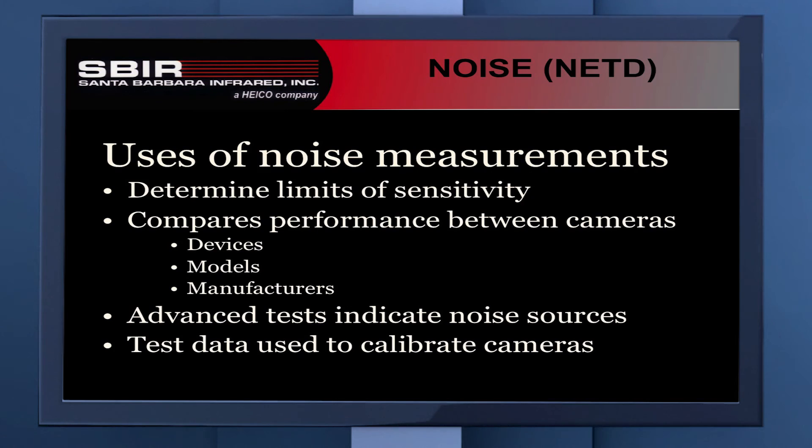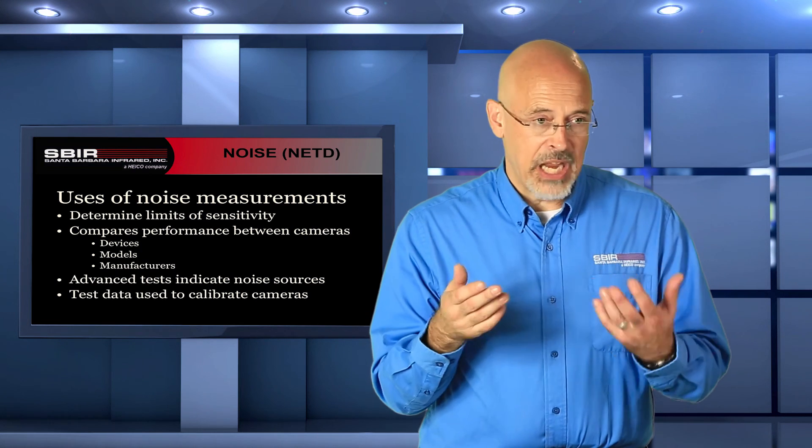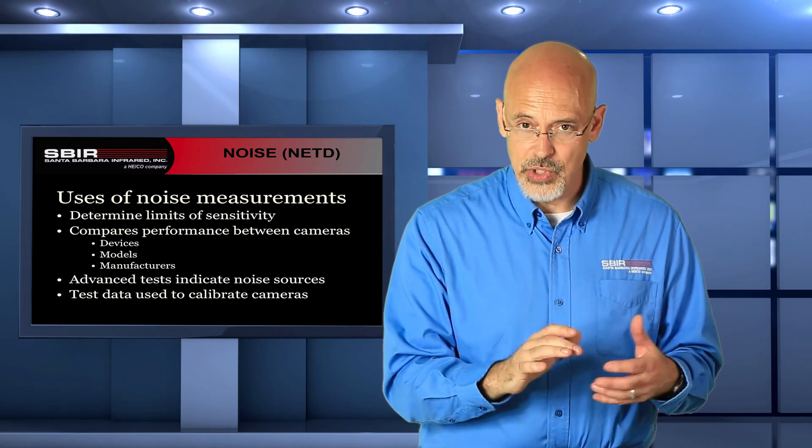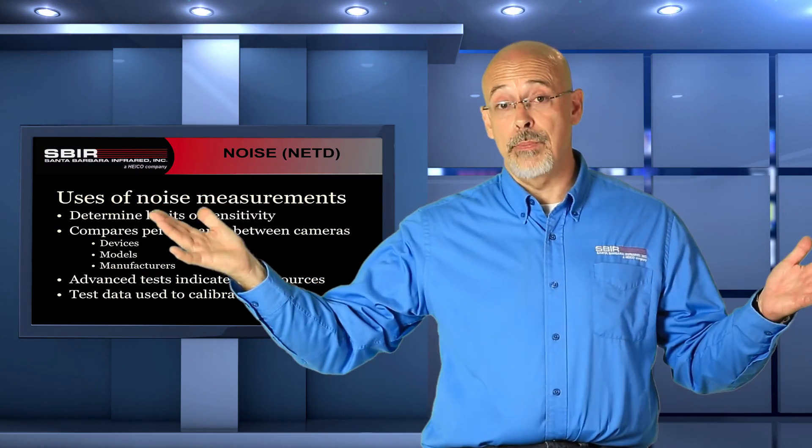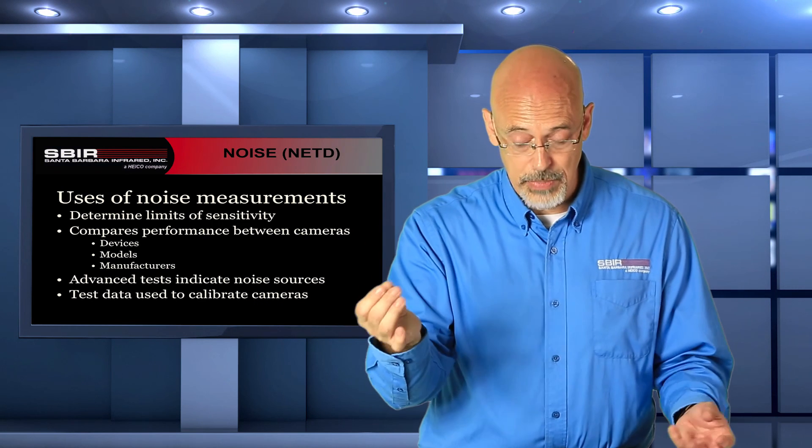What do we use noise measurements for? We use it to determine the limits of what the camera can see. We can compare performance between cameras. We can look at cameras from the same production line to see whether the camera is working properly. We can make calibration correction factors. It allows us to compare different models within a single manufacturer, but it also allows us to compare different cameras from different manufacturers so that we can see whether the camera is appropriate for the job. Not all cameras, just having the smallest NETD value is not necessarily the most important thing. Sometimes you want to have a camera that can see a very broad temperature range. You don't really care about the noise. But once you know the criteria of what the job of the camera is, you can know what limits there are going to be on the noise and you can pick out a camera.